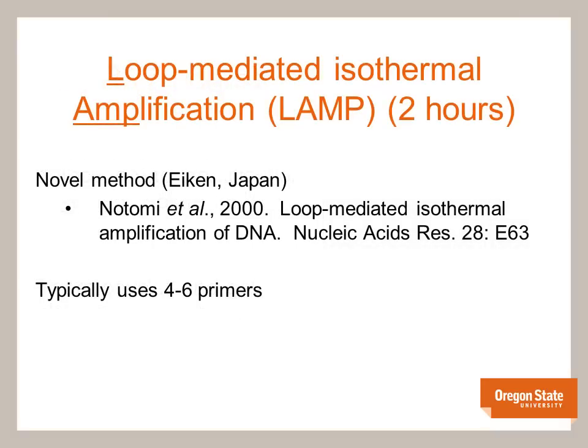A couple years later, in 2007, we decided to reduce both the confirmation time and expense of Rhodococcus fascians detection even further. The method we developed is called Loop-Mediated Isothermal Amplification, or LAMP for short. This method was developed in 2000 by Japanese researchers at EIKEN. During LAMP, stem loop structures are produced while the target DNA is amplified. This method uses four to six primers compared to the two primers used in PCR.